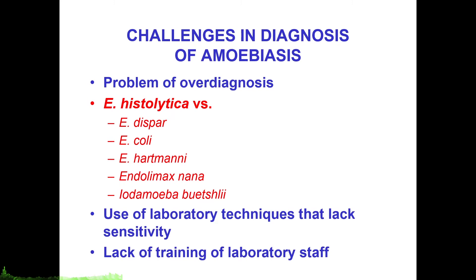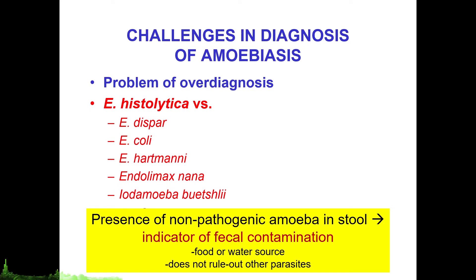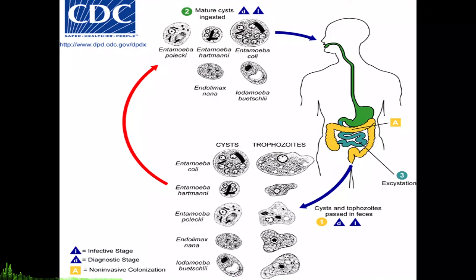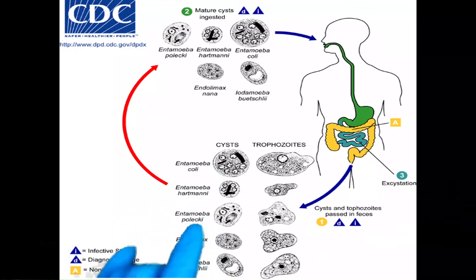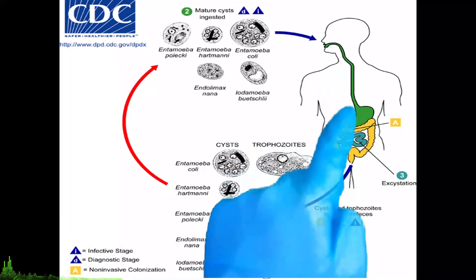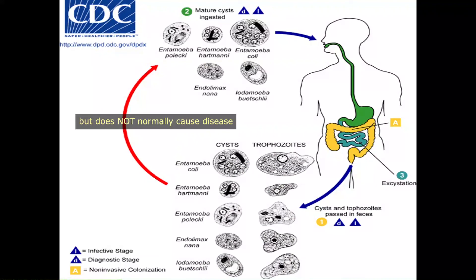The reason we need to study these non-pathogenic intestinal protozoans is that their presence in a patient's stool is a good indicator of fecal contamination in that patient's food or water source. If there is potential fecal contamination, we might suspect the patient is also at risk of other fecal-oral transmitted infections such as Entamoeba histolytica. These organisms — Entamoeba coli, Entamoeba hartmanni, Entamoeba polecki, Endolimax nana, and Iodamoeba butschlii — have a simple life cycle: they are ingested, pass through the system, are excreted, contaminate surroundings, and infect another person.